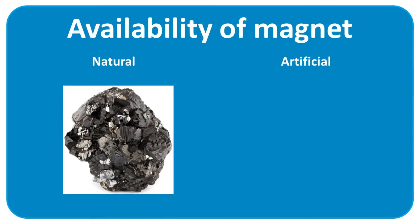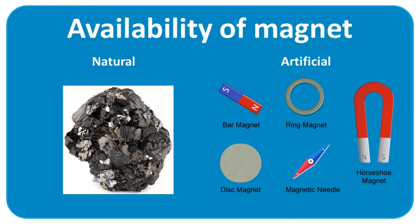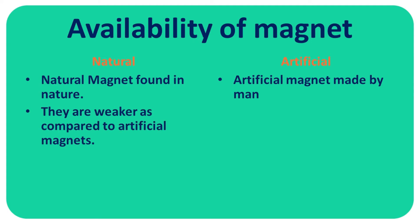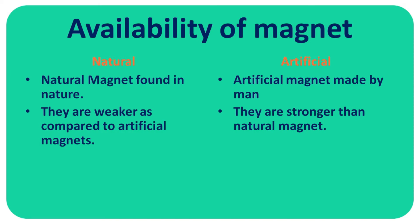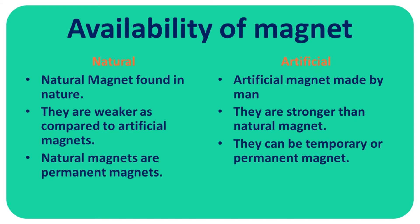Here are some examples of natural and artificial magnets. Natural magnets are found in nature, whereas artificial magnets are made by man. Natural magnets are weaker compared to artificial magnets. Natural magnets are permanent magnets, while artificial magnets can be temporary or permanent magnets.